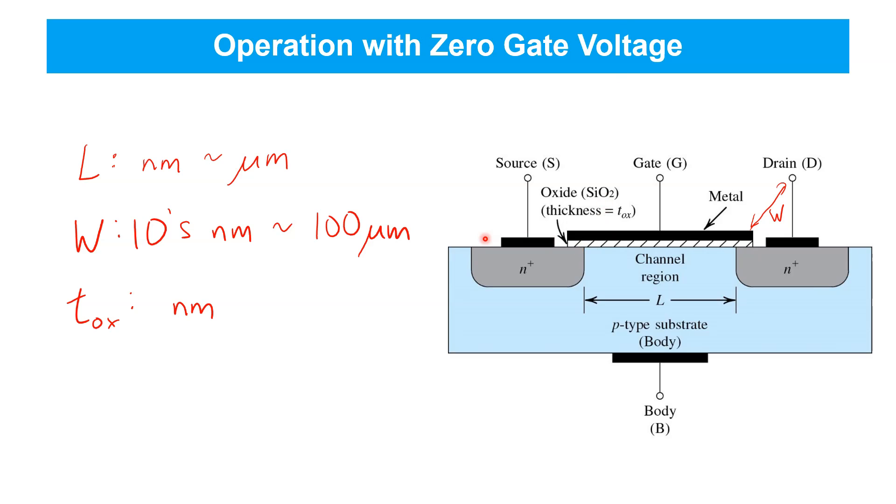The source and drain regions are heavily doped, as indicated by the little superscript plus sign here. So, they're conductors. But remember that in so-called enhancement mode MOSFETs, with zero voltages applied between all terminals, they're separated by depletion regions from each other, so no current flows between them.